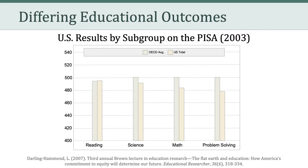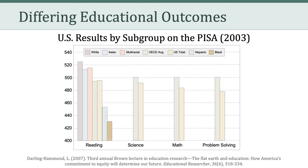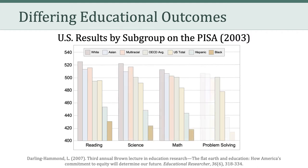What's important when thinking about educational equity and equality is thinking about how different subgroups within the United States fare in these four domains: reading, science, math, and problem solving. Here we can see how whites, Asians, and multiracial subgroups perform in reading — notice that it's higher than the OECD average, as well as the U.S. total. Here we see how Hispanics and blacks perform on reading. We see a similar pattern in science, as we do with math, and as we do with problem solving.